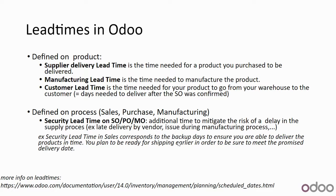The second kind of lead times are those defined on your process — usually security lead times. This is an additional time you add to your process to mitigate the risk of a delay, for example a late delivery from a vendor or issues during manufacturing. For example, if you promise to deliver next Friday and you add a security lead time of two days on your sales process, all internal processes will be planned so you're ready to deliver on Wednesday. This helps ensure that if something unexpected occurs, you won't miss the Friday deadline.